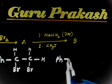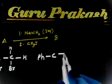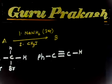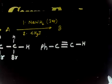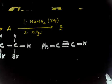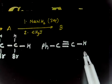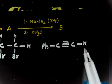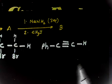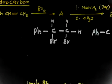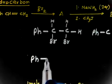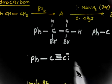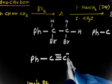So we have Ph-C≡CH. We have used 2 equivalents of NH2⁻. But the third equivalent will remove this terminal hydrogen, which is an acidic hydrogen. So the third equivalent takes this H⁺, giving Ph-C≡C⁻.